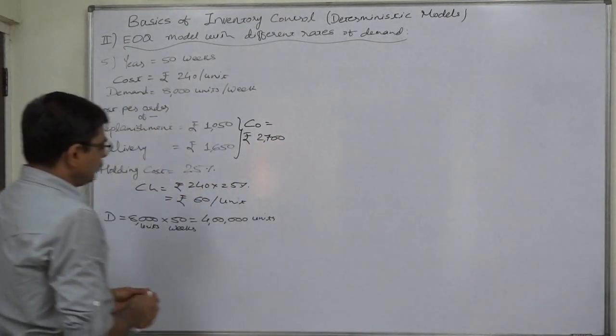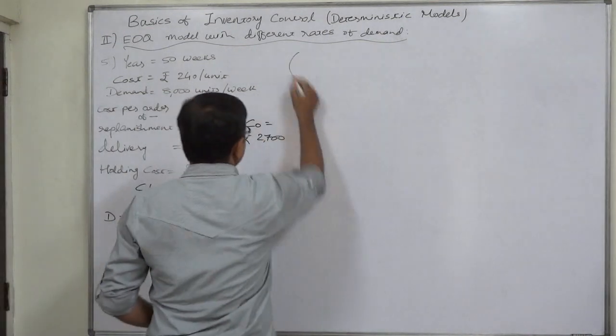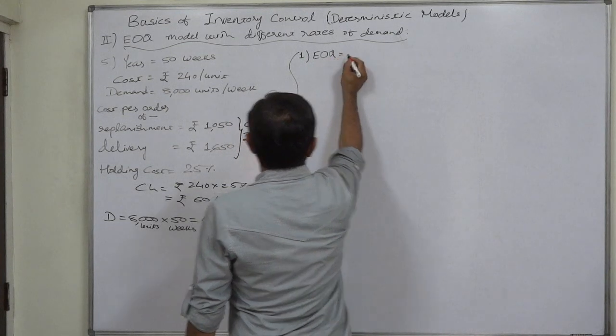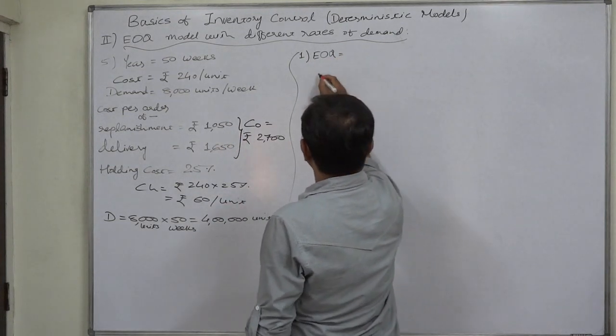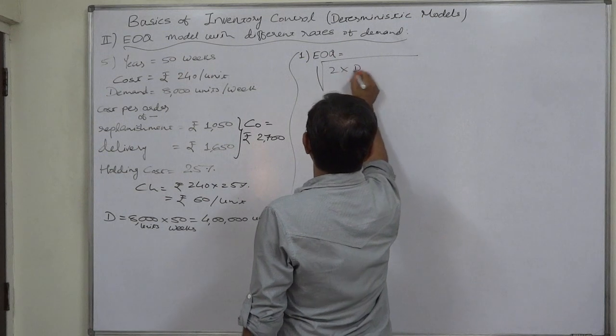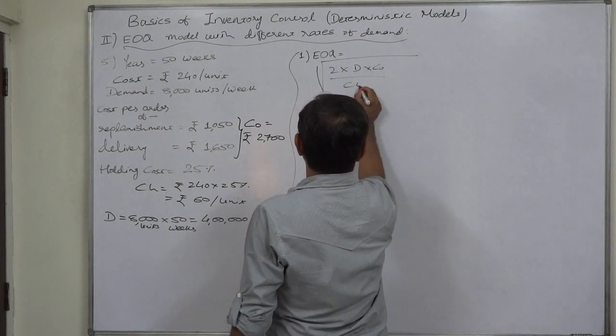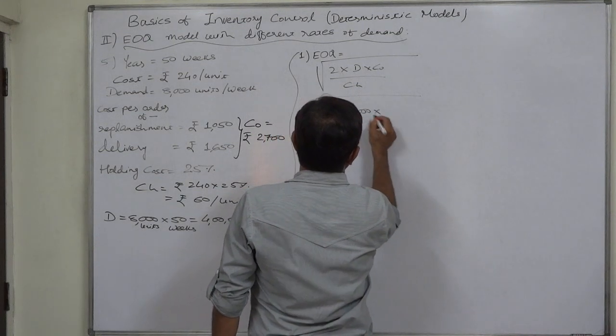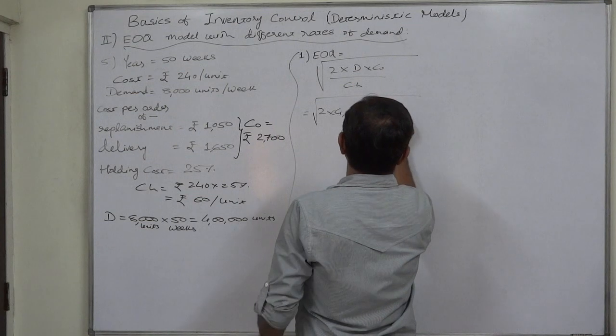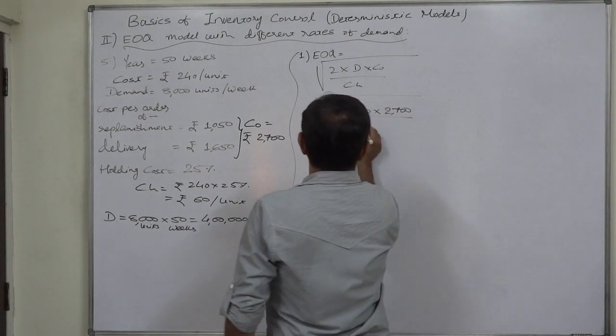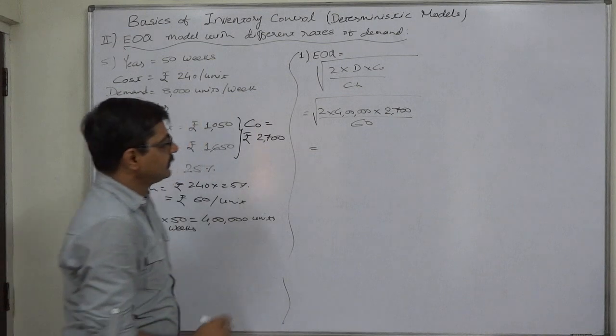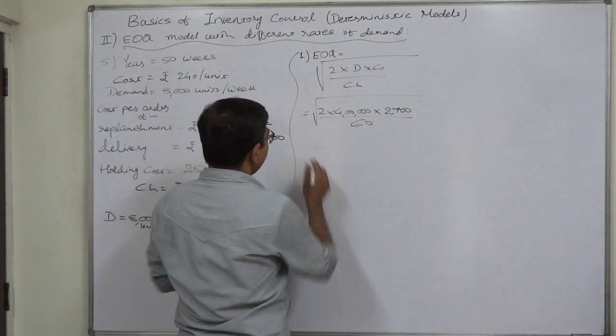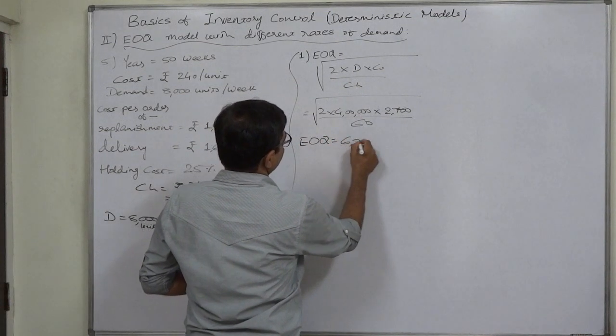Now let us go for calculation. First, as usual will be EOQ. The amounts are quite high. It will be under root 2 into D into CO by CH. It is root 2 into 400,000 into CO 2,700 divided by CH 60. If we simplify this function, the answer comes to EOQ equals to 6,000 units. We are quite lucky; since last two cases we are getting some smooth amounts or smooth figures.